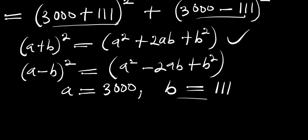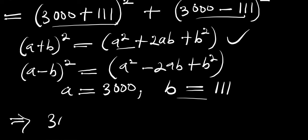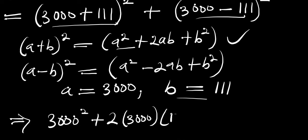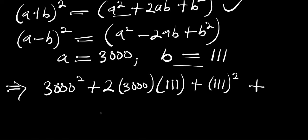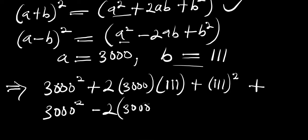Let's go ahead and insert this for a and b. Starting with the first one: a squared gives us 3000 power 2, plus 2 times 3000 times 111, plus 111 power 2. Then for the second term we have 3000 squared, minus 2 times 3000 times 111, plus 111 power 2.